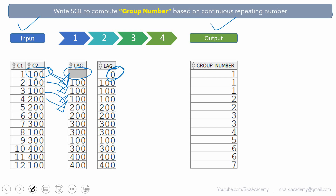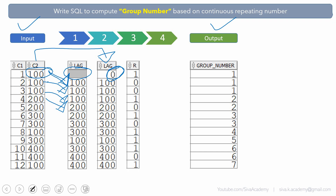Step 3 is to compare the C2 column with the value computed in step 2. When both column values are exactly the same, I print 0. If they are different, I print 1. For example, here 100 and 0 are different, so I print 1. Here 100 and 100 are exactly the same, so I print 0. Here 200 and 100 are different, so I print 1. Wherever the values are different, print 1; wherever they are the same, print 0. This is step 3.